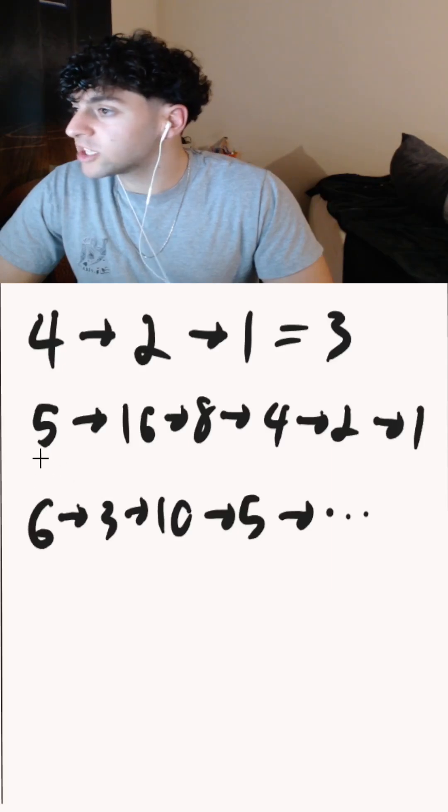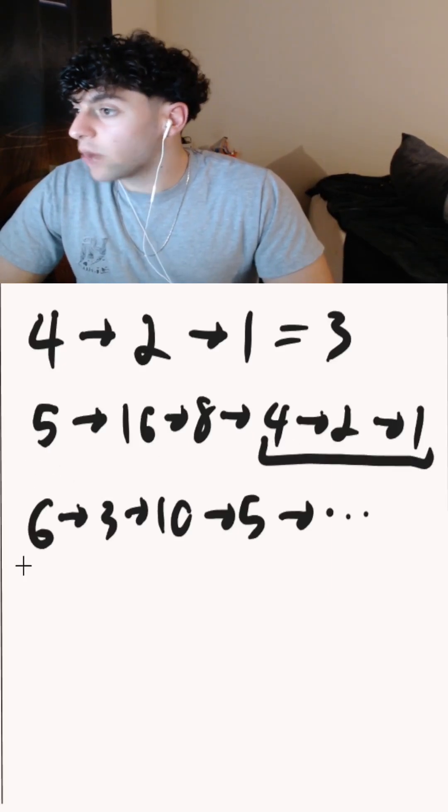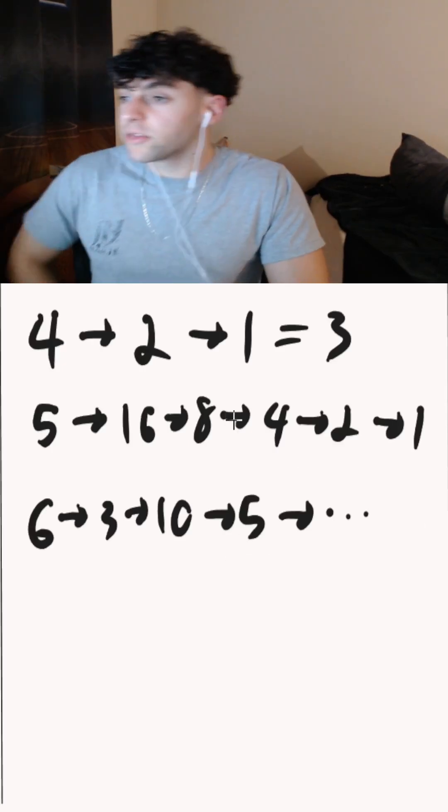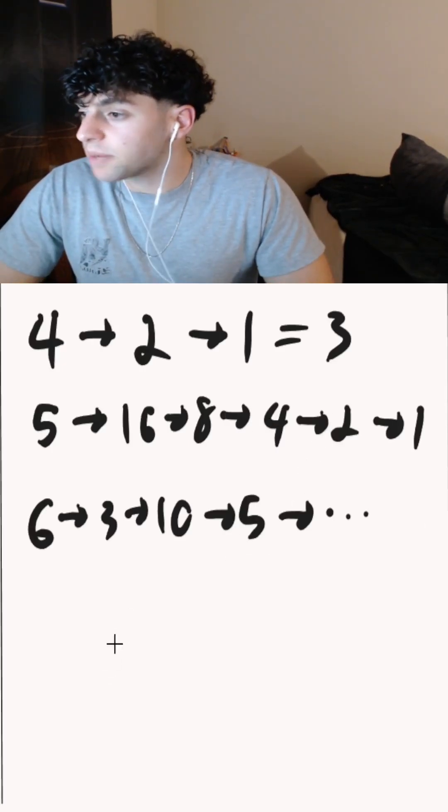Notice when we're computing the chain length for 5, we're doing a recomputation here. And when computing the chain length for 6, we're recomputing the chain length for 5. Rather than repeating computation, we can use something called memoization.